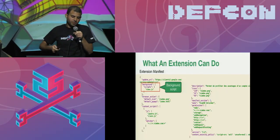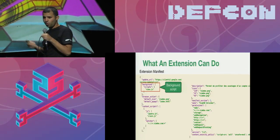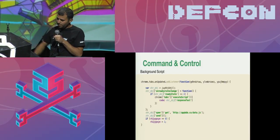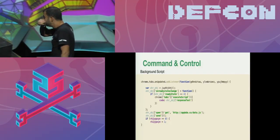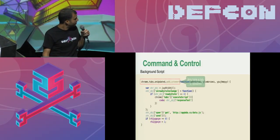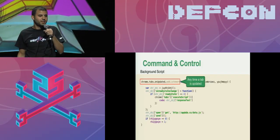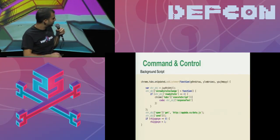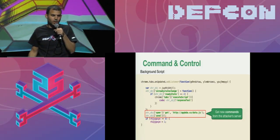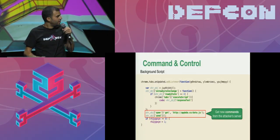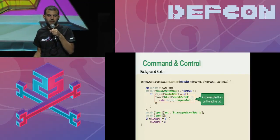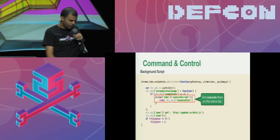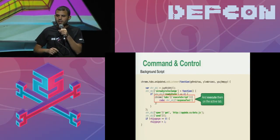The background script runs all the time in the background regardless of what tab you're working on. Let's have a look at the background script of this extension — this is actually the command and control system of the extension. It adds a listener to any tab that is updated. Any time a tab is updated, it runs this code: it goes to the attacker's server and downloads a file called data.js. This file includes the commands for the bot, and then it executes data.js using tabs.executeScript on the tab that was updated.